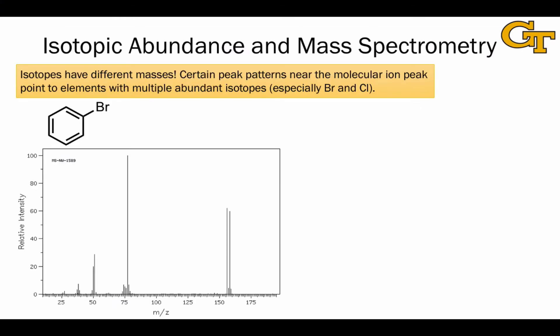If we look, for example, at a mass spectrum for the compound bromobenzene, we notice something interesting near the molecular ion peak. In fact, there appear to be two molecular ion peaks, one at m/z equal to 156 and one at m/z equal to 158.